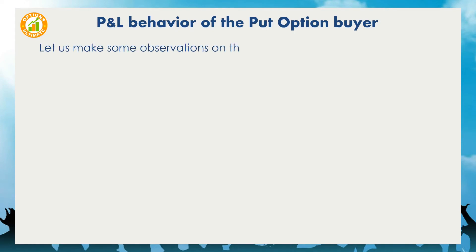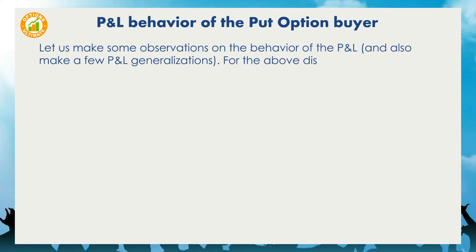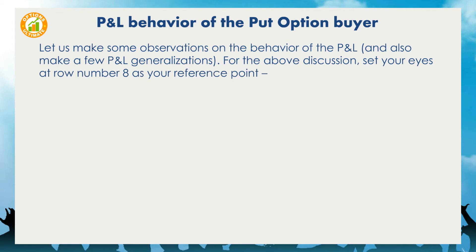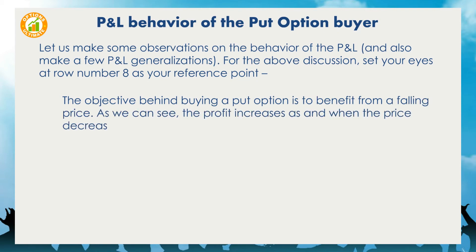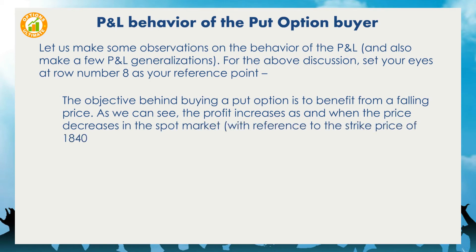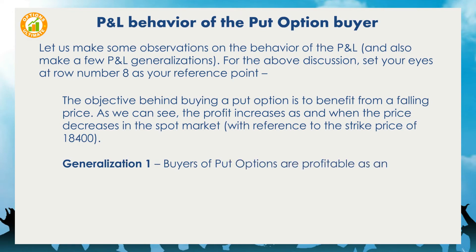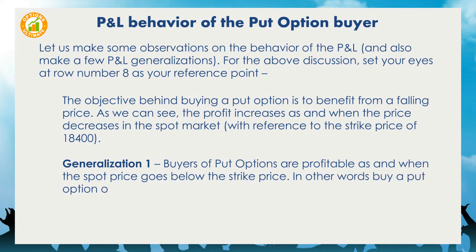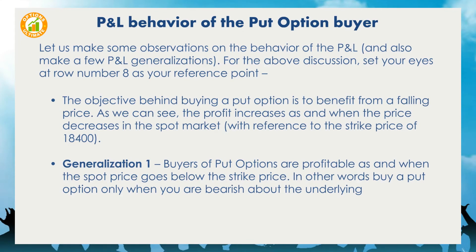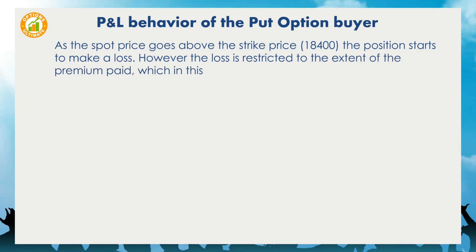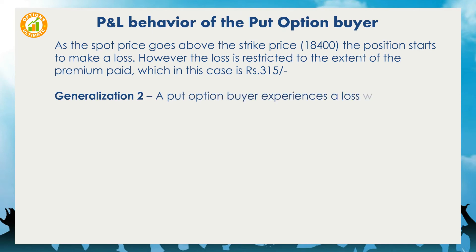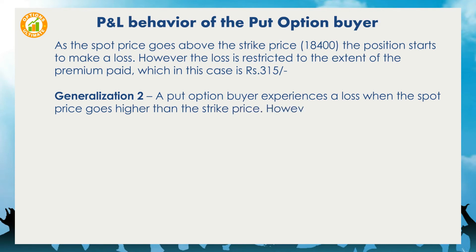Let us make some observations on the P&L behavior and make a few generalizations — set your eyes at row number 8 as your reference point. The objective behind buying a put option is to benefit from a falling price; the profit increases as and when the price decreases in the spot market relative to the strike price of 18,400. Generalization 1: buyers of put options are profitable as and when the spot price goes below the strike price — buy a put option only when you are bearish about the underlying. Generalization 2: a put option buyer experiences a loss when the spot price goes higher than the strike price; however, the maximum loss is restricted to the extent of the premium paid, which in this case is ₹315.